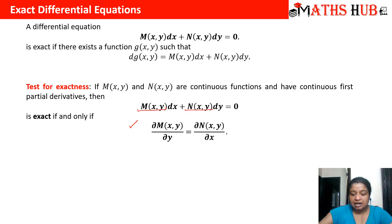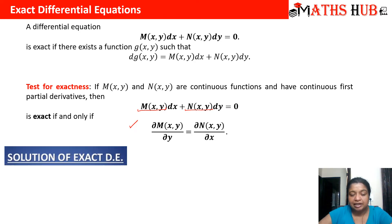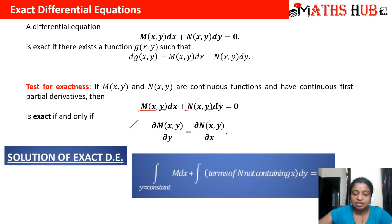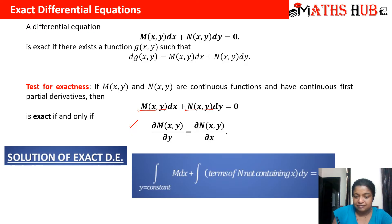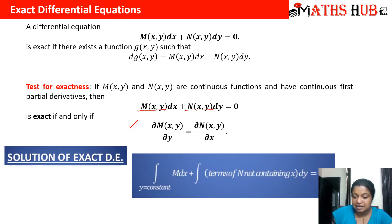After the test for exactness, how do we calculate the solution of the exact differential equation? The solution is calculated as the integration of M dx, where we keep y constant. Whatever terms of M contain x, we keep those terms with y held constant, and in the second integral we only take those terms of N which are not containing x. We integrate that with respect to y.